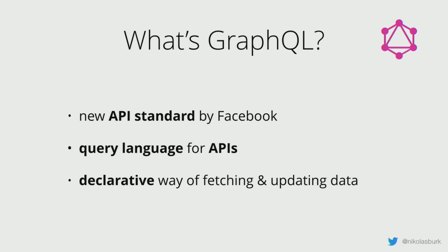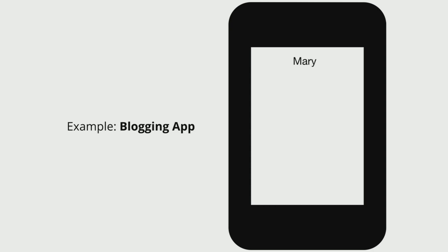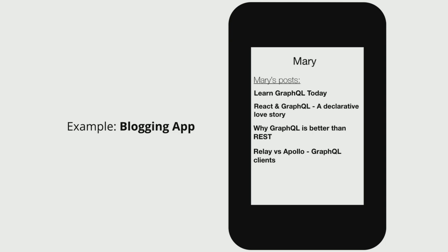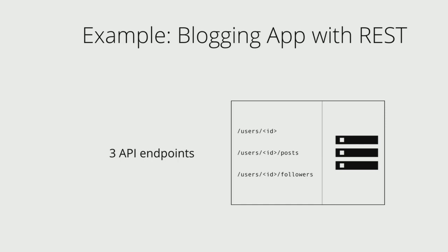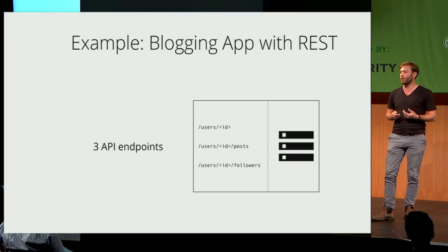GraphQL enables a declarative way of fetching and updating data against an API. To understand how it works, let's take a blogging application with a profile screen showing the user's first name, all their posts, and the last three followers. How would we tackle this with a REST API?